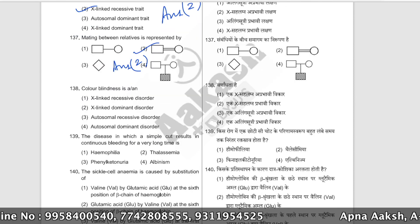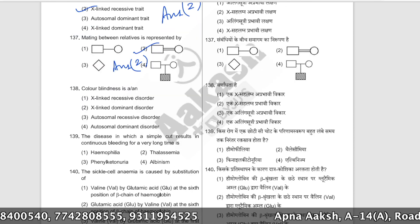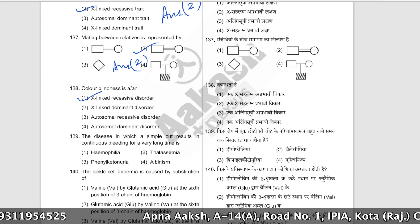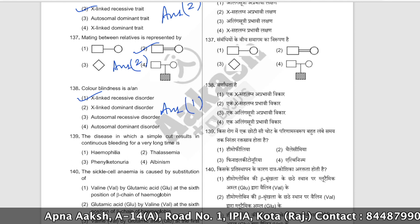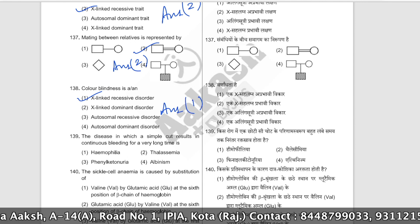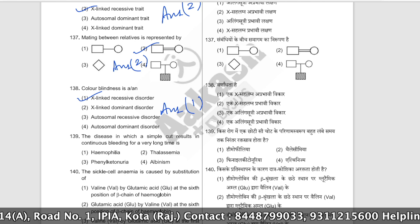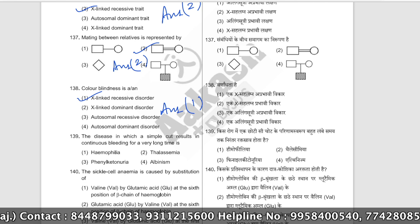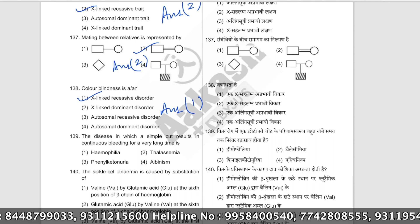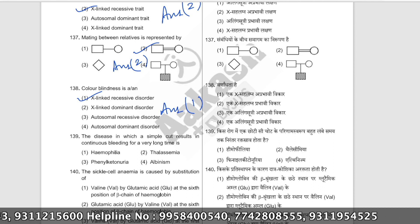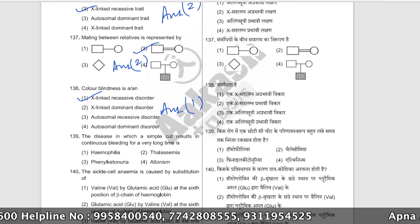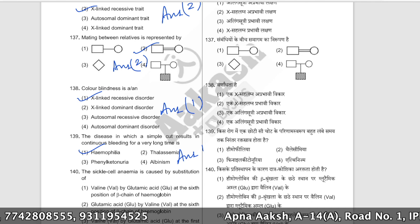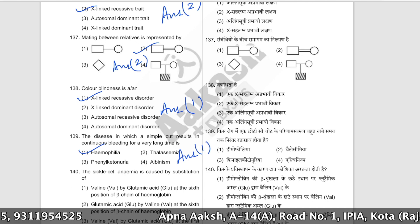Color blindness (Varnandhata) is an X-linked recessive disorder. The disease in which a simple cut results in continuous bleeding for a very long time is hemophilia — Queen Victoria was a carrier of hemophilia. The correct answer confirms hemophilia is the bleeding disorder.